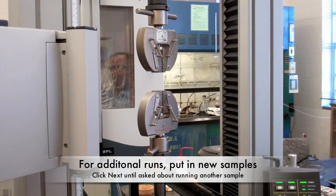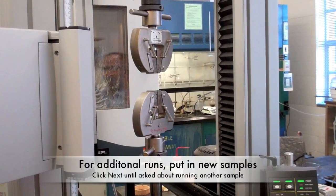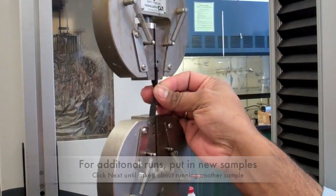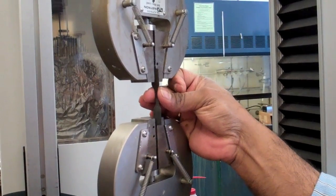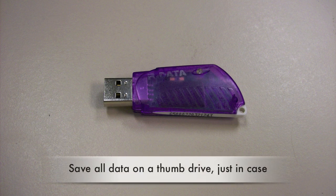For additional runs, remove the broken specimen from the clamps and replace with your next sample. Press the next button until asked if you would like to run another test under the same method. Then complete previous steps. Save all data on the thumb drive just in case data is lost.